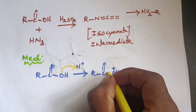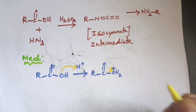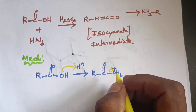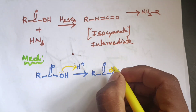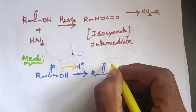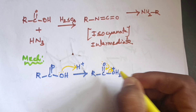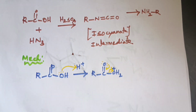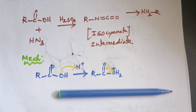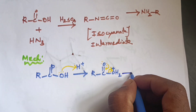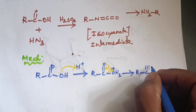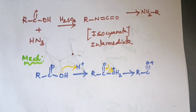Therefore, this sigma bond is broken and the OH2+ leaves. The oxygen donates its lone pair to form a pi bond, giving R-C≡O+ — a triple bond with a positive charge on oxygen.